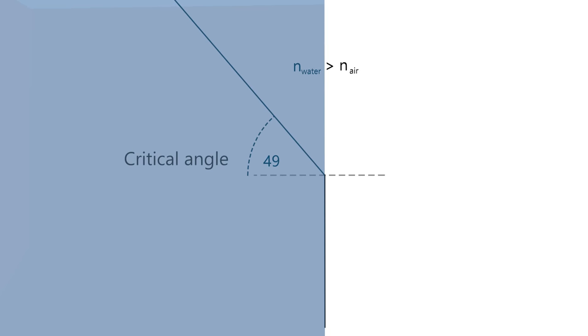This angle is called the critical angle. If the ray comes from a greater angle, we experience internal reflections. The ray just bounces around in the material. This is used in fiber cables.